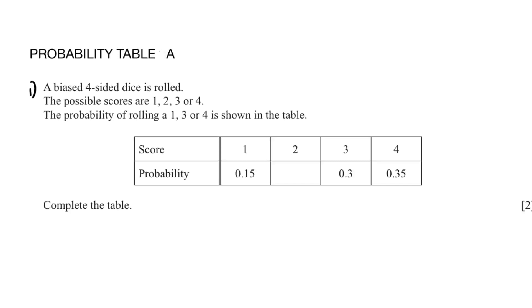First question. A biased four-sided dice is rolled. The possible scores are 1, 2, 3, or 4. The probability of rolling a 1, 3, or 4 is shown in the table. Complete the table.